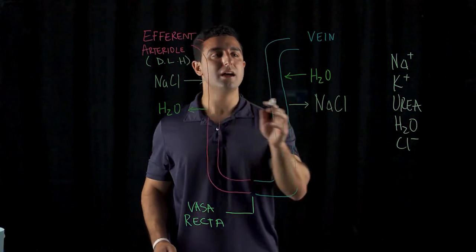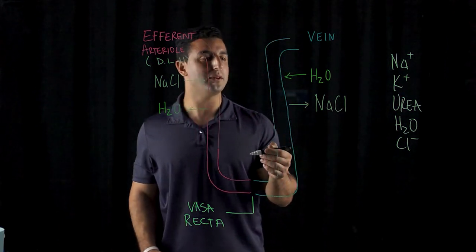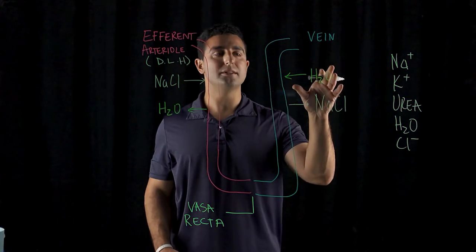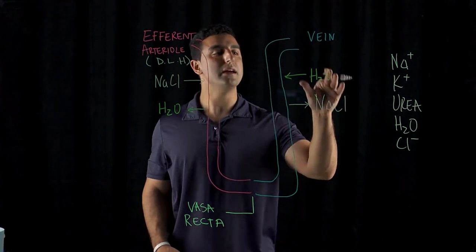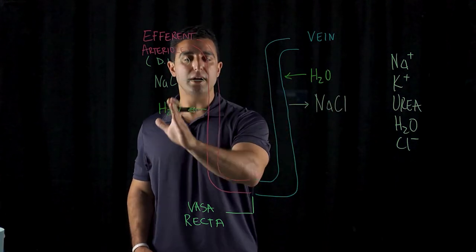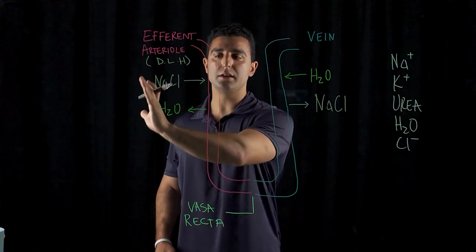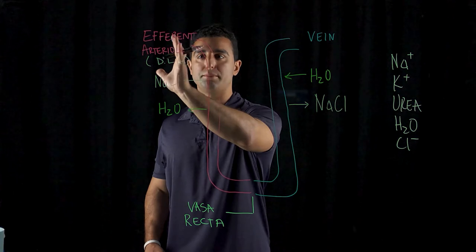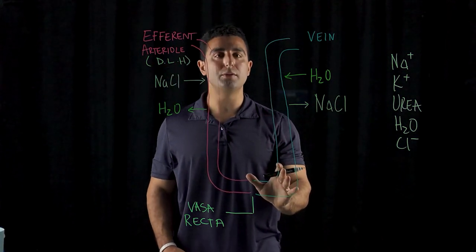So it's both cases are a passive process based off of the different gradients that are created. And so the amount of salt, whatever salt we're looking at specifically, allows for the movement of the specific water. Here now, after you have this complete dilution in the first region here of the descending loop of Henle, now there's a problem with the gradient.